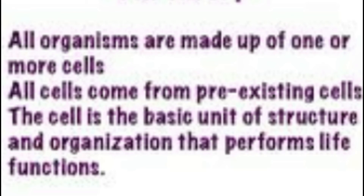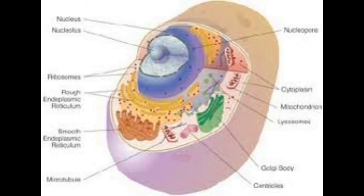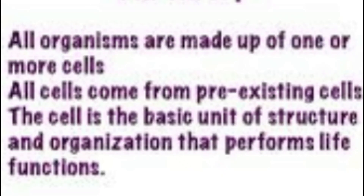Number three: Rudolf Virchow established that the cell is the basic unit of structure and organization that performs life functions. It's the most basic unit in life. The cell itself has parts to it, those parts are surrounded by a cell membrane, and that cell is the most basic structure of life.